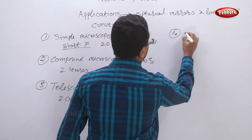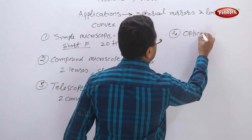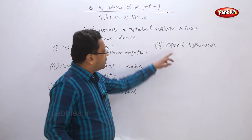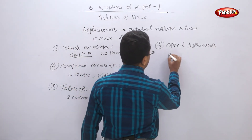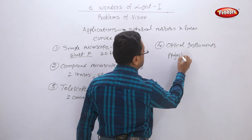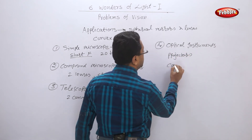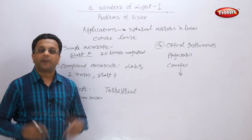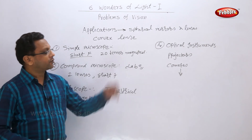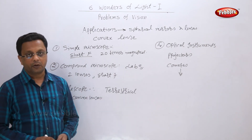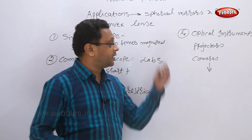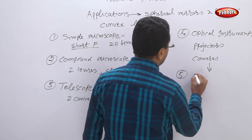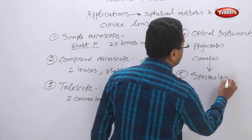Convex lenses are also used in various optical instruments such as projectors, cameras, and spectrometers. There are several optical instruments where the convex lens plays an important role.